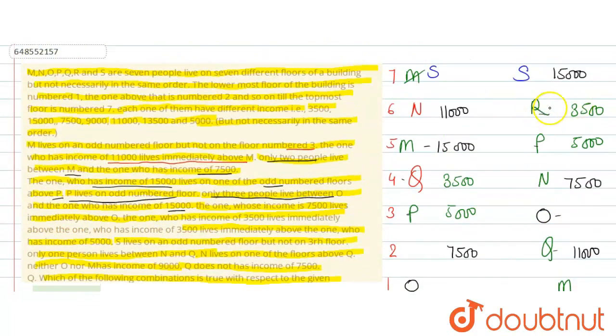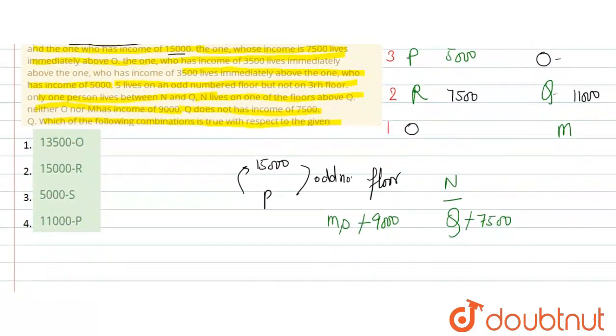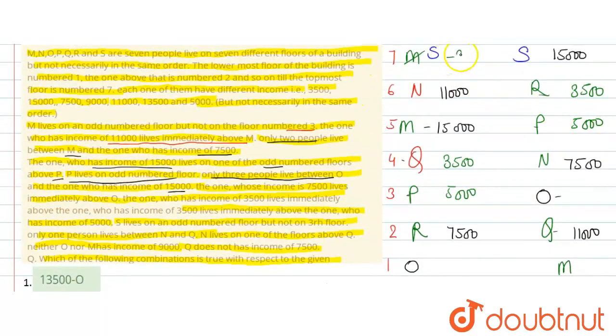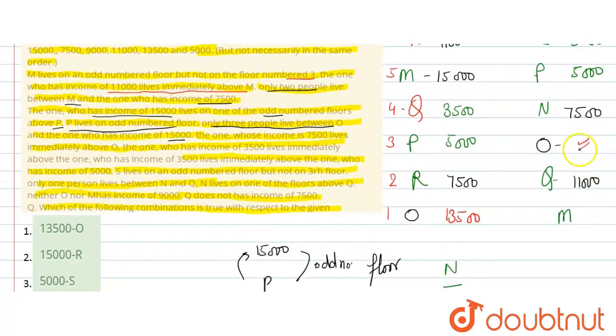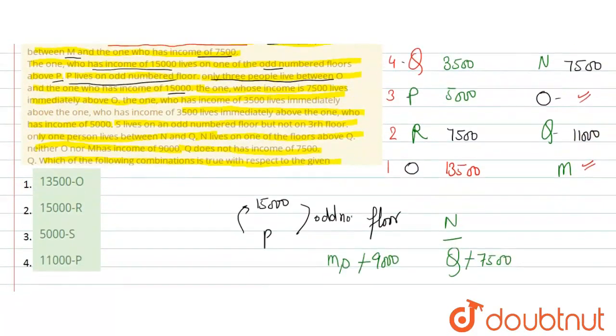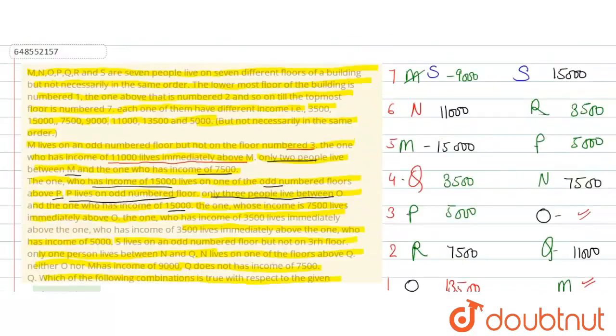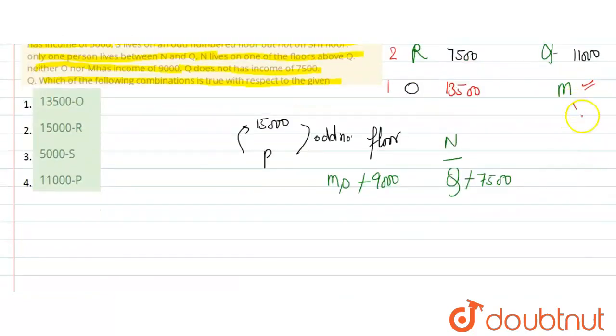So here comes R. In this case here R comes, in this case here R comes. So O and M's salary is not 9000. So S's salary becomes 9000, and O's salary becomes 13500. Now in this case either O's salary or M's salary will be 9000, but everyone's salary is already defined, so this arrangement is wrong because neither M nor O can have salary of 9000.